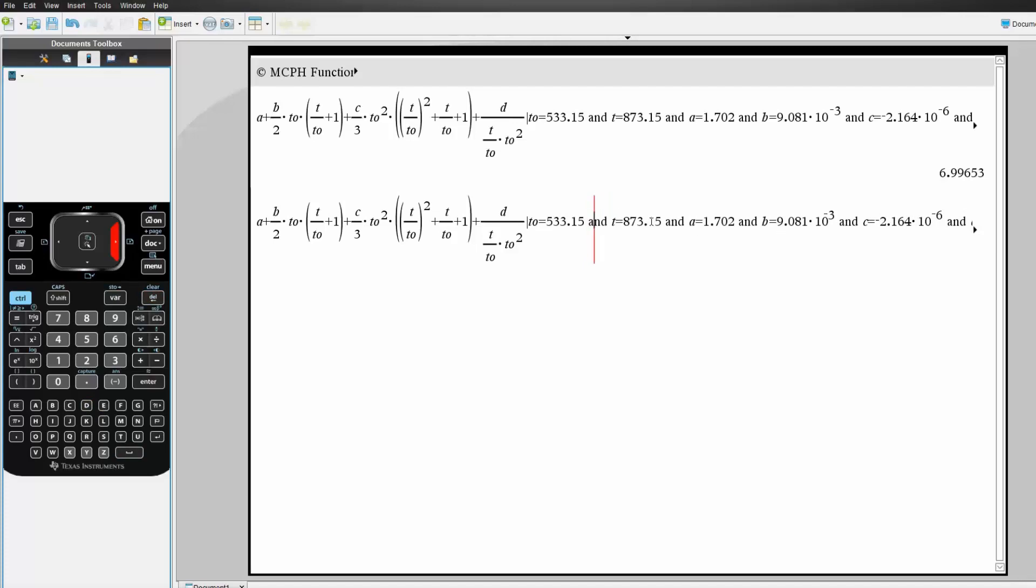So, and T is equal to this, and A is equal to this, and B is equal to this, and C is equal to this, and finally, and D is equal to this.